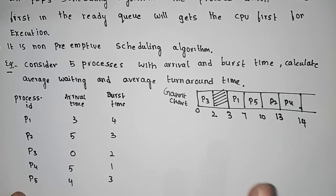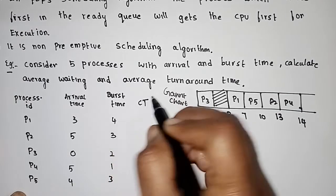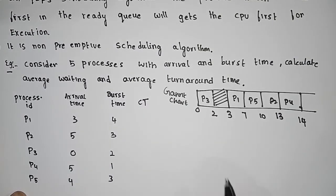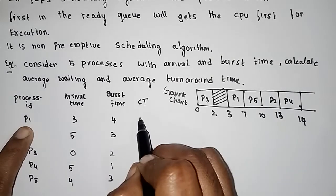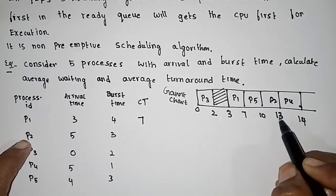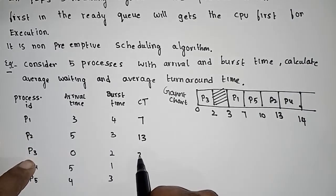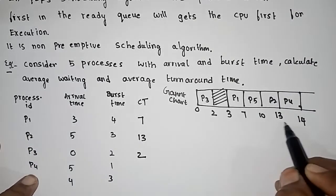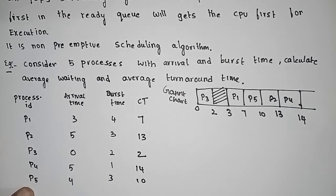Next, completion time: P1 is 7, P2 is 13, P3 is 2, P4 is 14, P5 is 10. So this is the completion time.